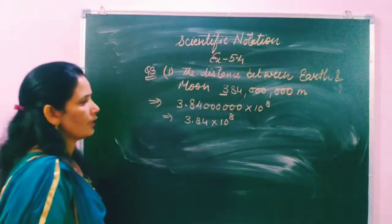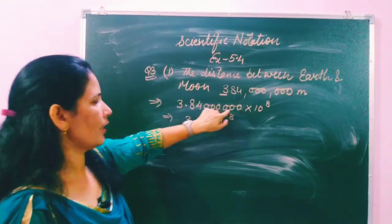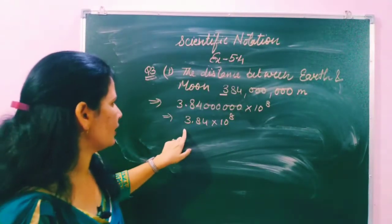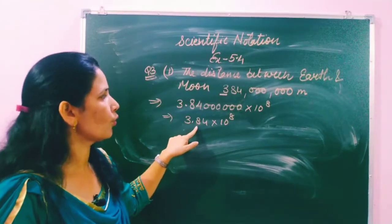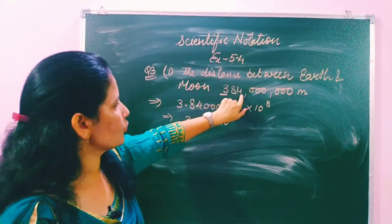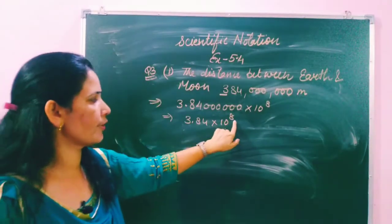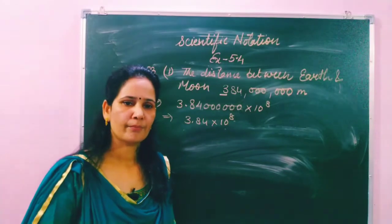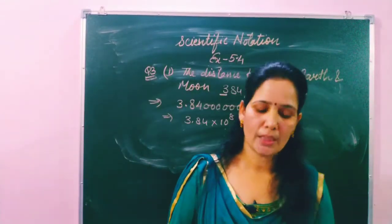Since the trailing zeros after decimal can be skipped, we simply write 3.84. Count the digits after the decimal in the original number — 1 through 8 — and write the power of 10 accordingly. So the distance between Earth and Moon in scientific notation is 3.84 × 10^8. That is how we write this in scientific notation.